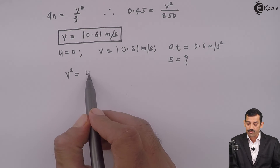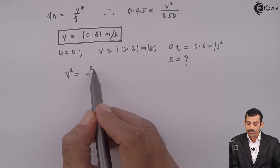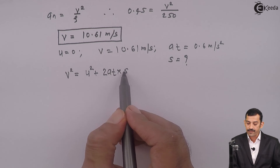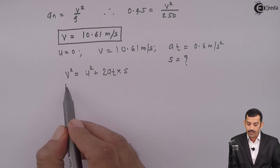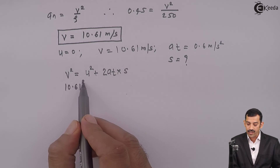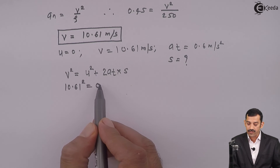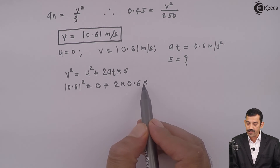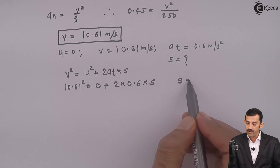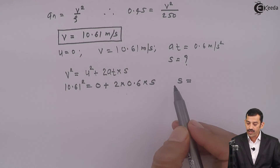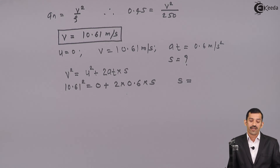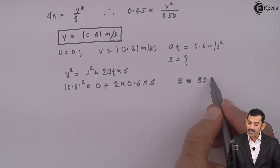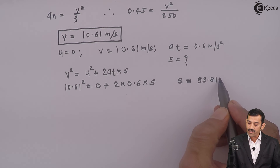Using the kinematic equation V squared equals U squared plus 2 times AT times S: we substitute V = 10.61, U = 0, and AT = 0.6. So 10.61 squared equals 0 plus 2 times 0.6 times S. Using the calculator, the distance S comes out to be 93.81 meters.